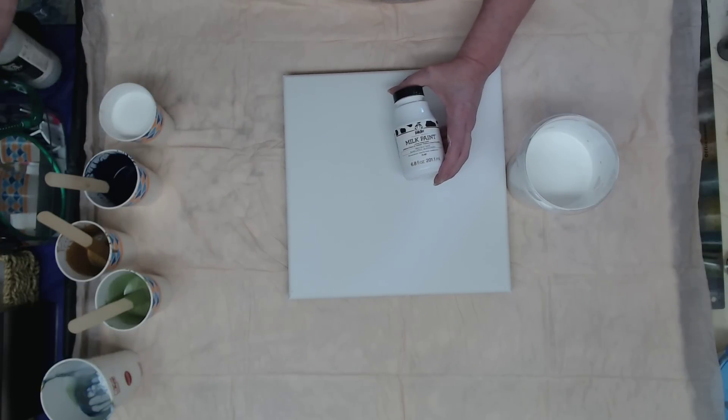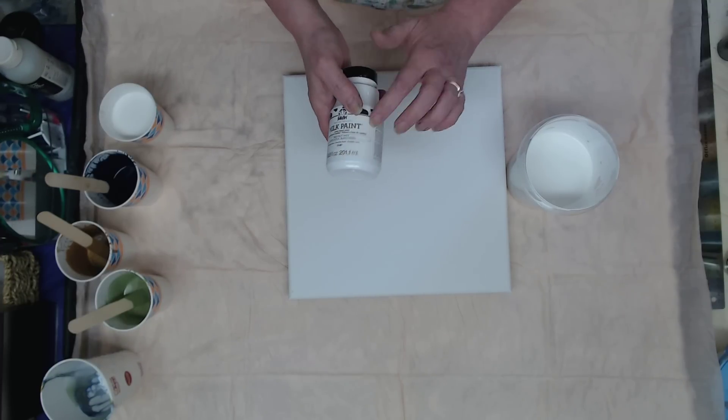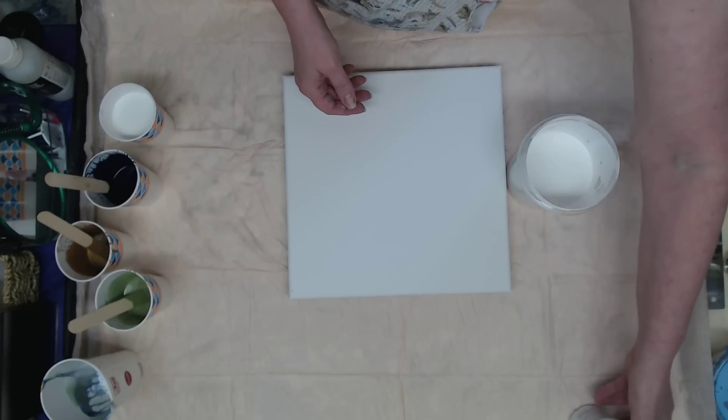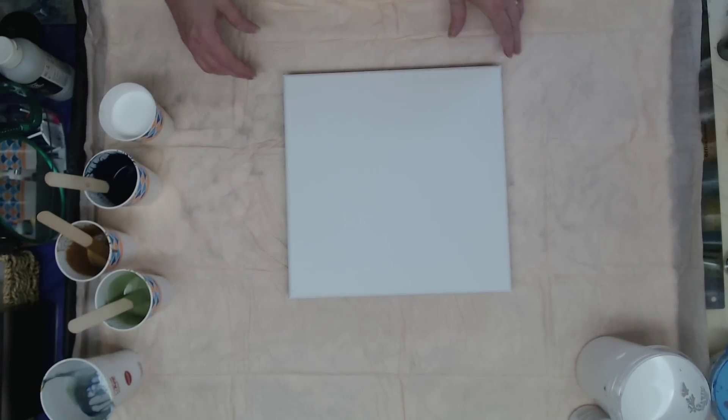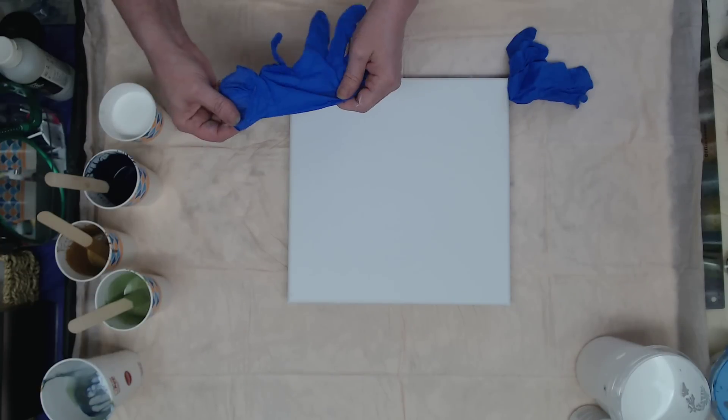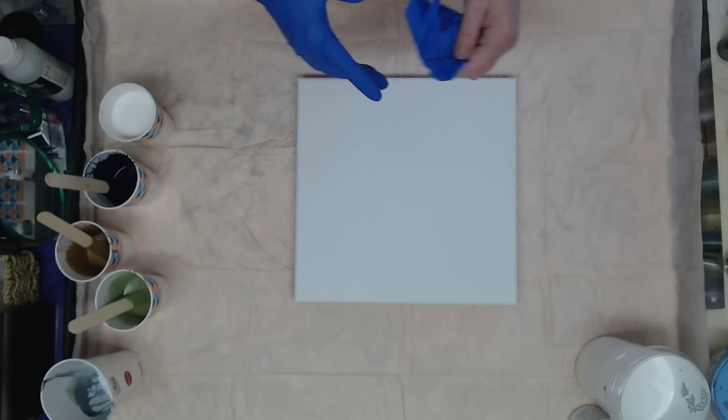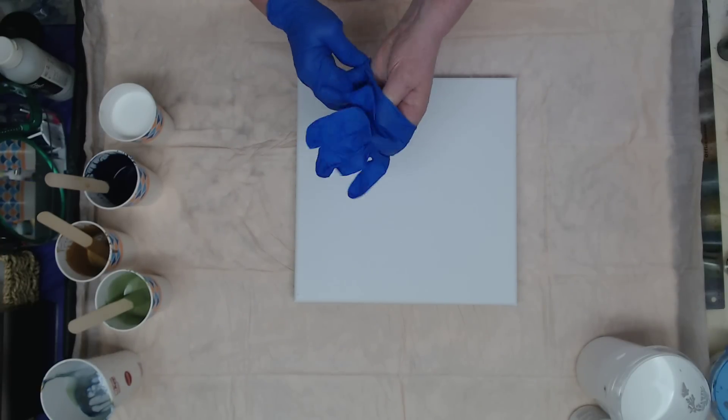And I also did 3.4 ounces, I'm sorry I did two bottles of this with Floetrol and then added water to consistency. So that's my mix for that. We're just experimenting with it. I have two more bottles of the milk paint that I'd like to try mixing differently to see what different results we might get, but today we're just doing this mix.